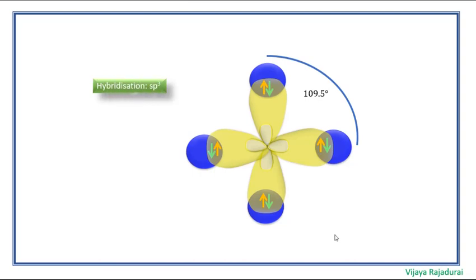Here, the angle is 109.5 degrees. The hybridization of methane is sp3. Its structure is tetrahedral.